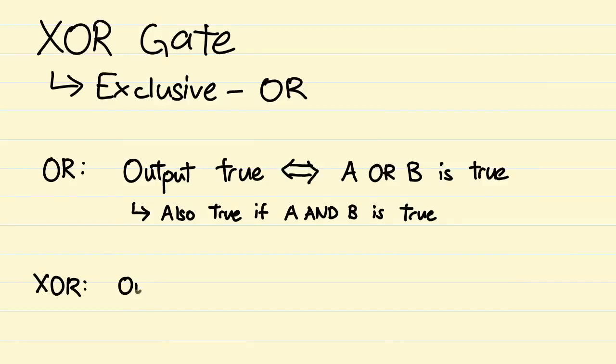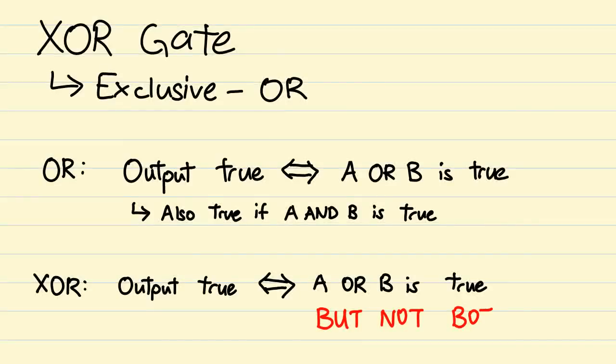You see, XOR will return an output of false if both inputs are true. This means the general rule for XOR will go something like, if input A or input B is true, but not both, the output will be true.